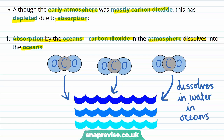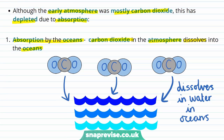We know that carbon dioxide can be dissolved in water because this is how we form fizzy drinks, which are fizzy because of a high level of dissolved carbon dioxide. The ocean isn't fizzy, but the presence of such a large amount of water means that considerable amounts of carbon dioxide from the atmosphere can be dissolved into the oceans.